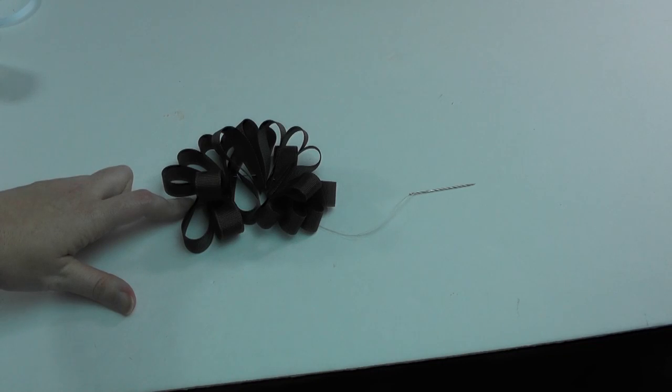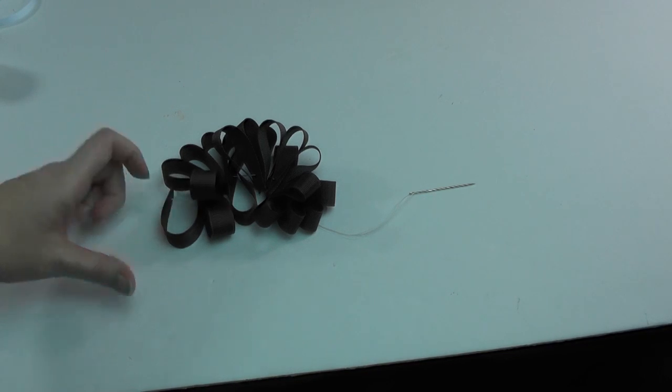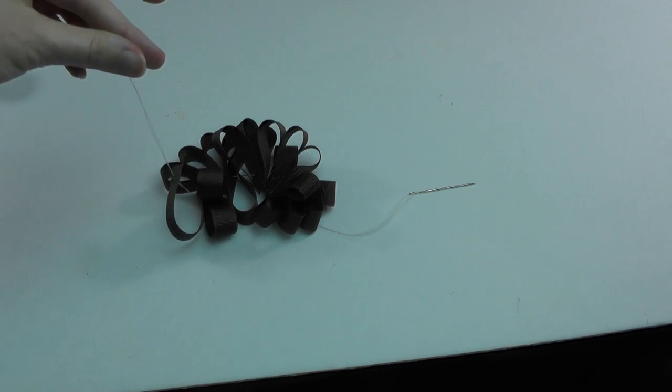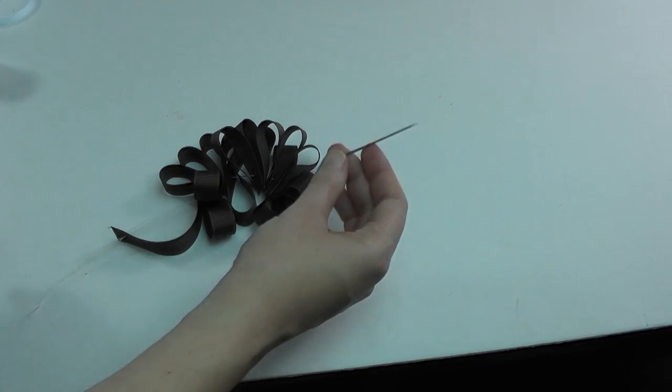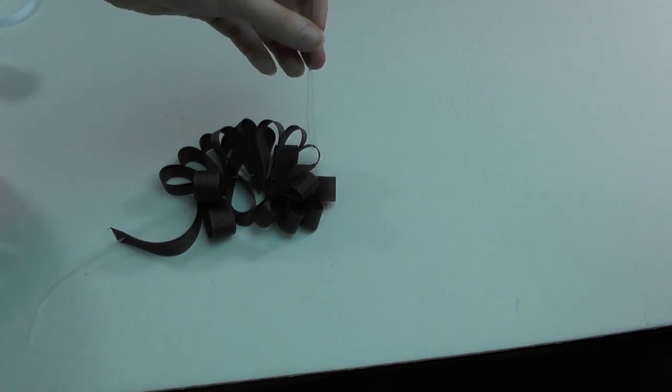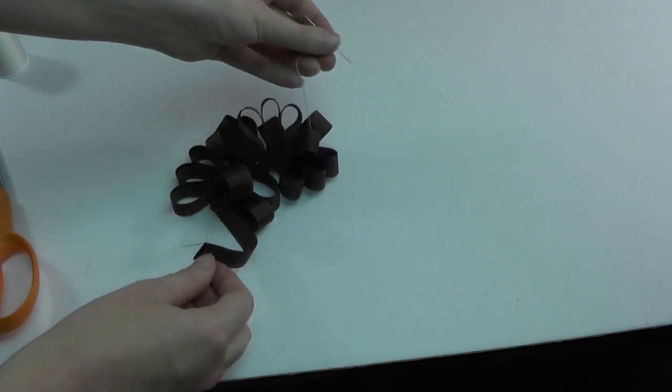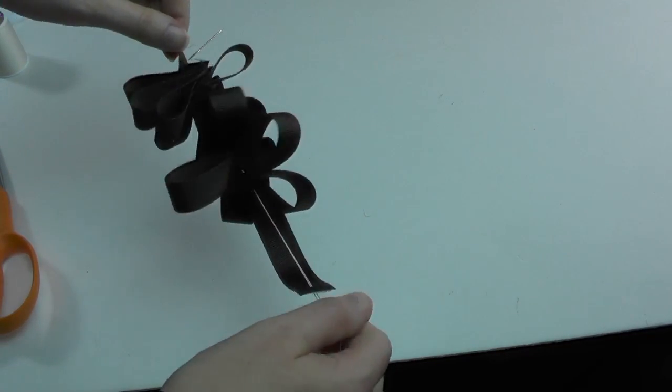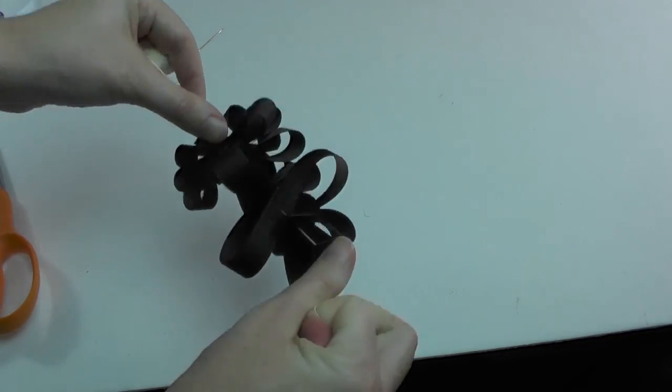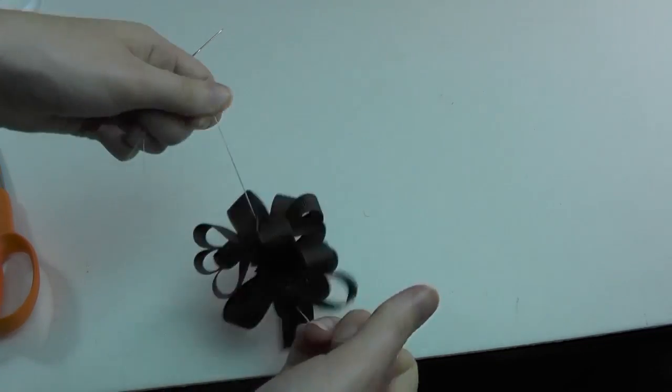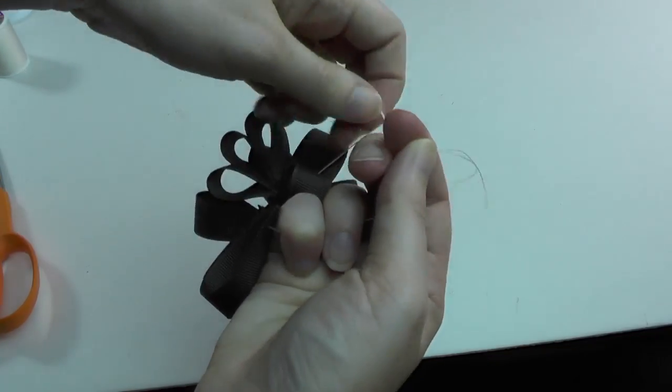Once you have taken your ribbons off of your needle, now we're going to get both ends of the thread. I'm going to clip the needle portion off and then you're going to grab both ends of your thread and we're going to scrunch everything together. And then we're going to tie the ends together.